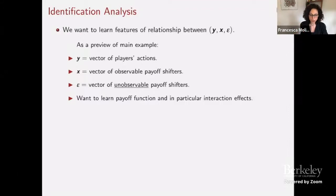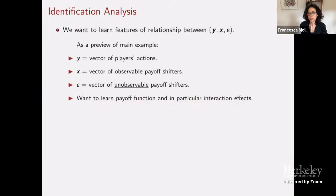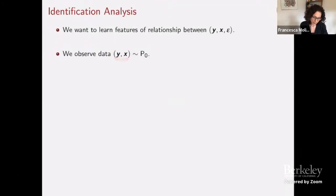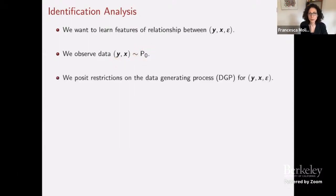All firms observe the features epsilon, but the researcher does not. What we want to do is learn the payoff function — in particular, the interaction effect: what's the effect on the profits of player one due to the presence or absence in the market of player two? As a researcher, the only thing we observe is data on y and x — the outcomes of the game and observable payoff shifters — and from this data we can learn their joint distribution p0.